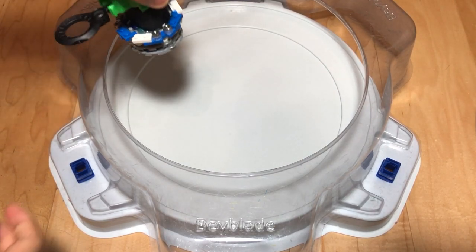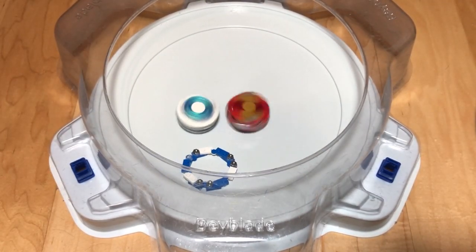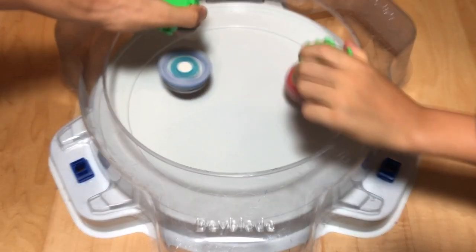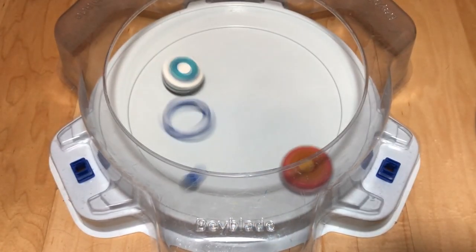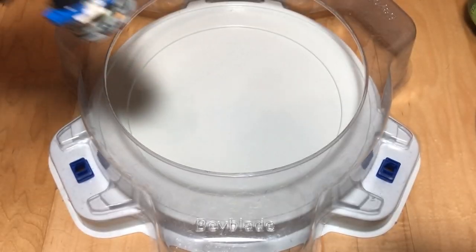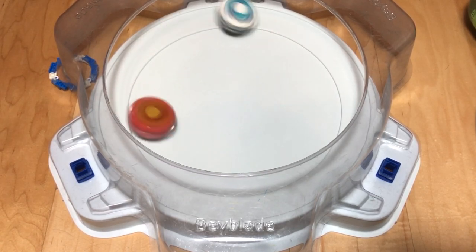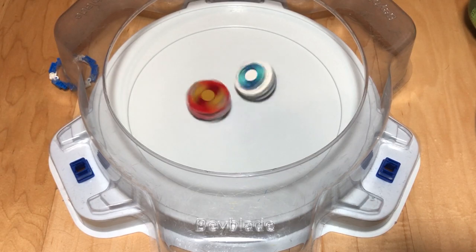There goes Phoenix. Phoenix versus Longinus. Three, two, one, let it rip. Was that a double burst? I think one of them burst a bit before. Three, two, one, let it rip. That was close.